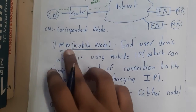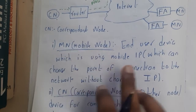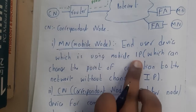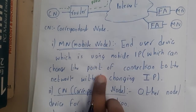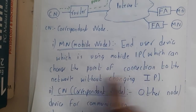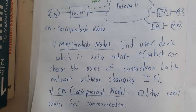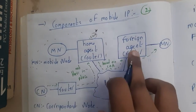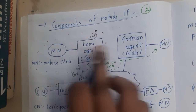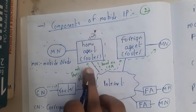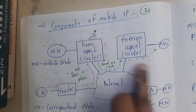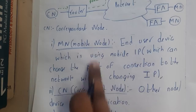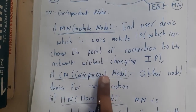MN, or mobile node, is each user device which is using Mobile IP and can change the point of connection to the network without changing their IP address. Basically, his IP address did not change — he's just changing his position. Instead of his messages going there, now they are going here. That's it, simple.